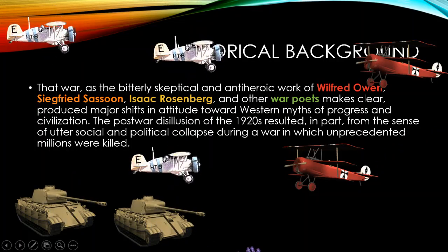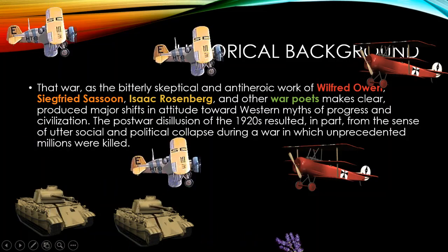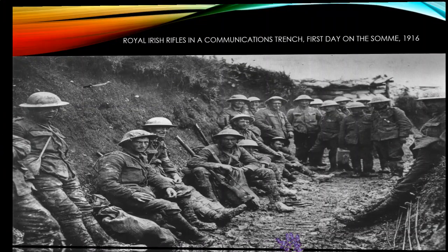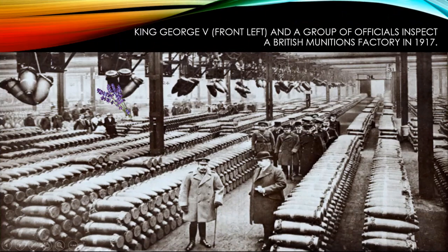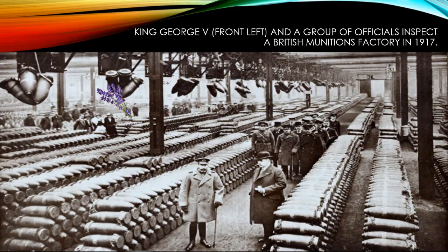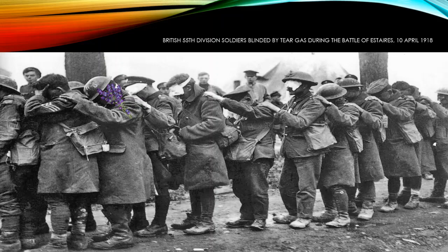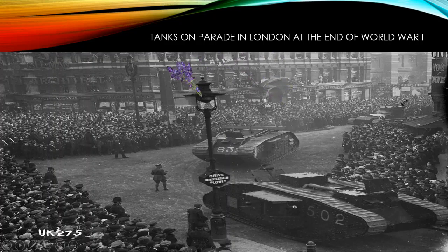The tank was an innovation of the English in the First World War, and it is said that without the tank, England and its allies might not have won the war against Germany. Historical photographs show the Royal Irish Rifles in a communications trench on the first day on the Somme in 1916, King George V inspecting British munitions factories, and British 55th Division soldiers blinded by tear gas during the Battle of Lys in France on 10 April 1918. Biological and chemical weapons were used for the first time by the Germans in this war. Tanks paraded in London at the end of the war as symbols of victory.